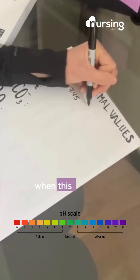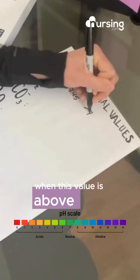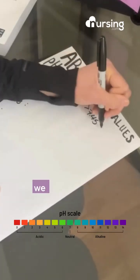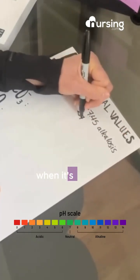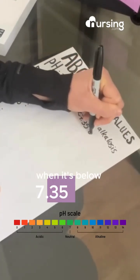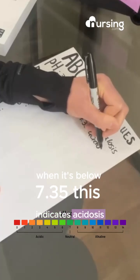When this value is above 7.45, we know we have alkalosis. When it's below 7.35, this indicates acidosis.